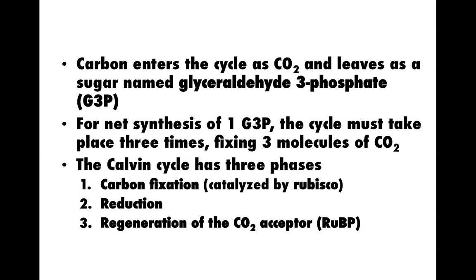The sugar from the Calvin cycle is glyceraldehyde 3-phosphate, or G3P. That should sound familiar — we saw it in glycolysis after the energy investment phase as one of the three-carbon molecules. It's not many steps removed from converting G3P to glucose. Plants produce G3P directly and can then convert it to glucose. To produce one molecule of G3P the cycle must run three times, because G3P has three carbons, requiring three molecules of CO2. Coincidentally, the Calvin cycle breaks down into three phases.